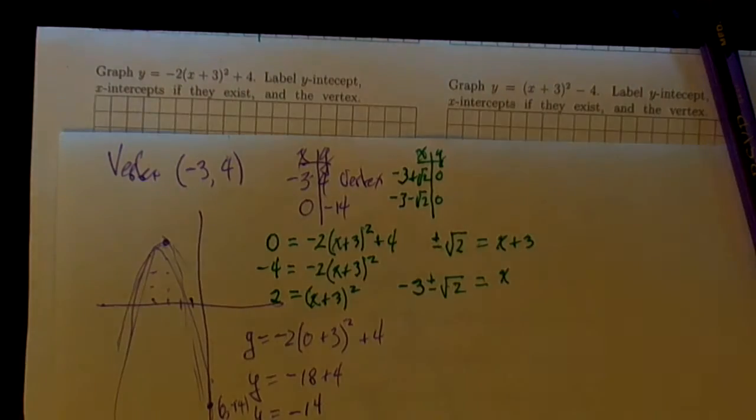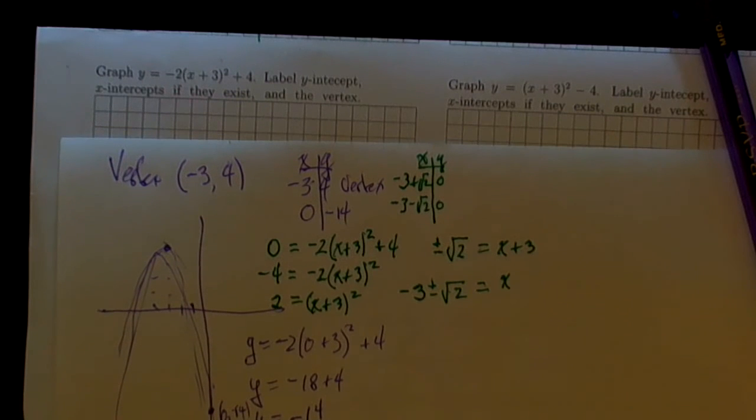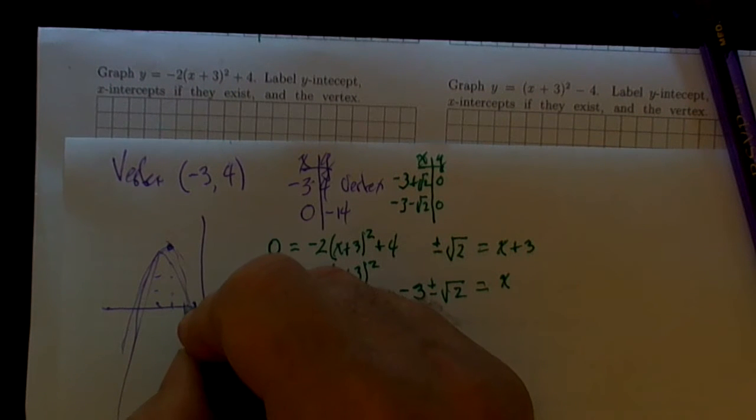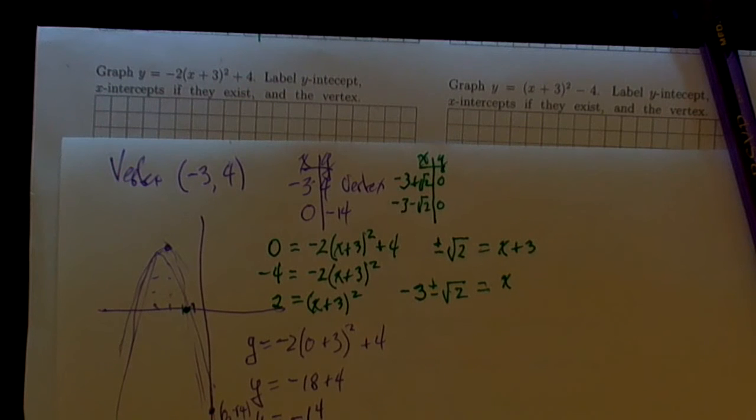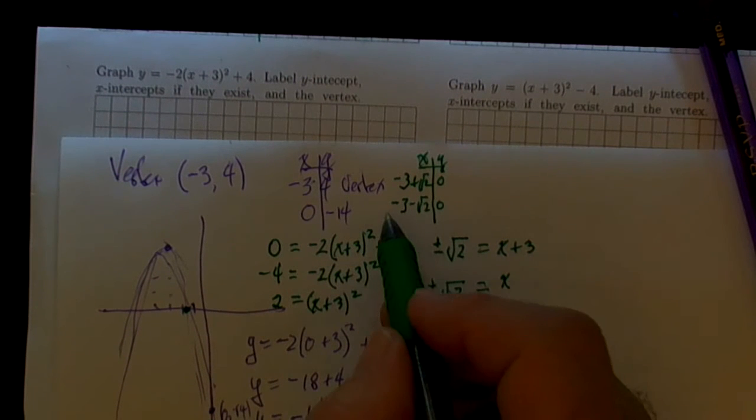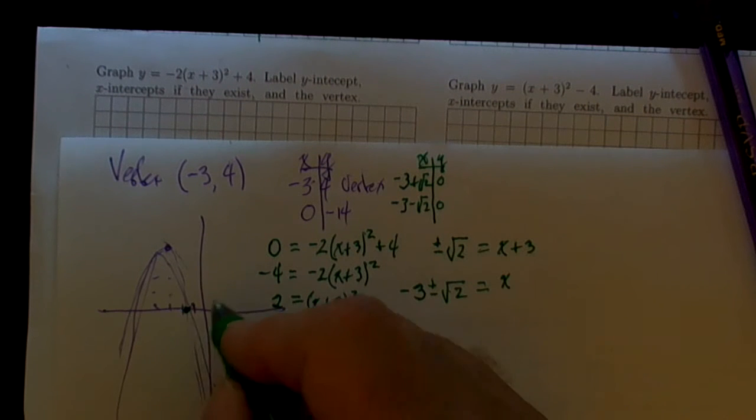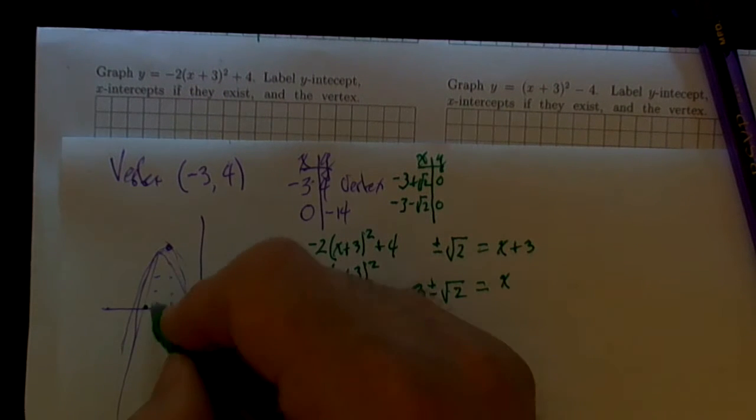Now, the square root of 2 is about 1.4, or a little less than 1 and a half. So minus 3 plus 1 and a half would be about minus 1 and a half. Oh look, it's about where it's showing in our picture as well. Minus 3 minus 1 and a half would be minus 4 and a half, somewhere over there.